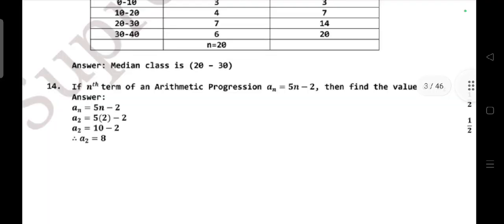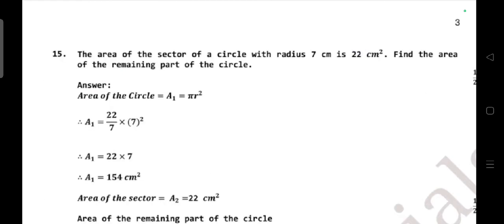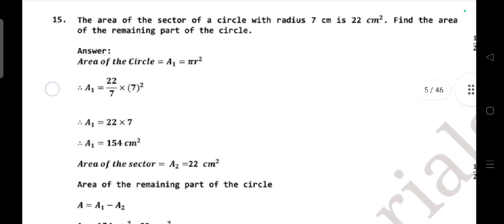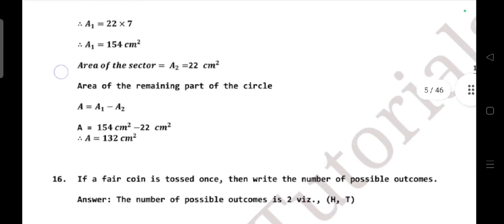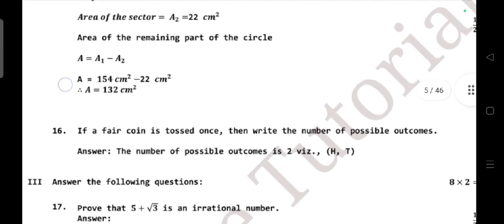If the nth term of the arithmetic progression aₙ = 5n - 2, then find the value of a₂. Answer is 8. Question number 15: the area of a sector of a circle with radius 7 cm is 22 square centimeters. Find the area of the remaining part of the circle. Take down the answers. If a fair coin is tossed once, then write the number of possible outcomes. Answer is possible outcomes: H, T.